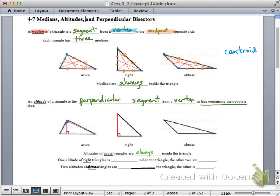For a right triangle, notice something different. Two of the altitudes are actually on the triangle. They are legs of the triangle, and the other is inside. So one altitude of a right triangle is inside the triangle, and the other two are legs of the triangle.